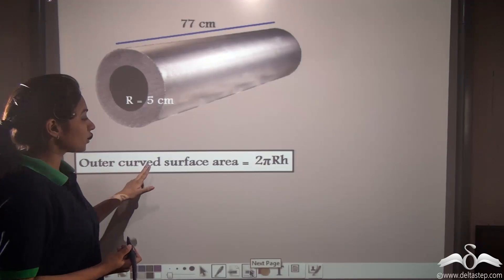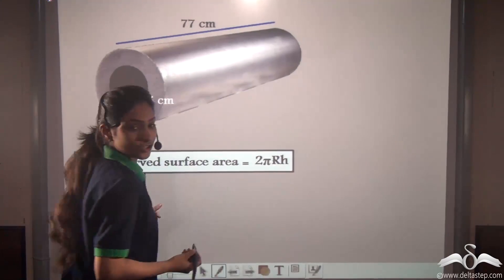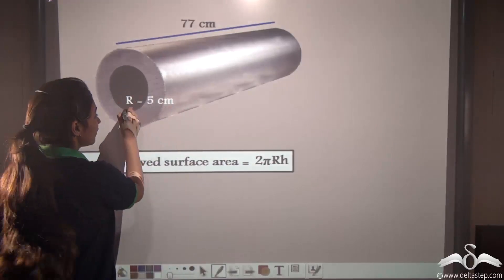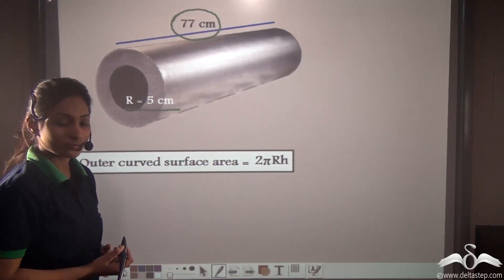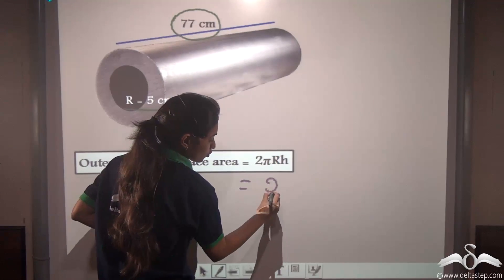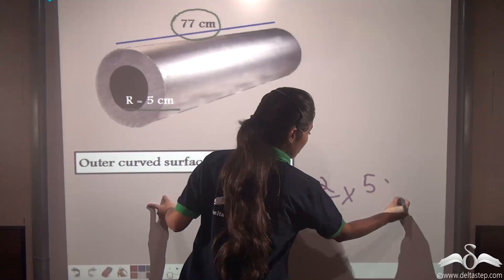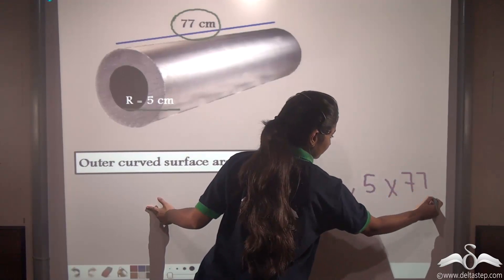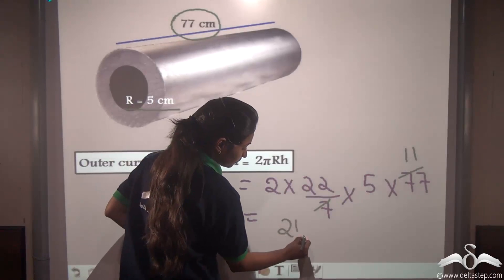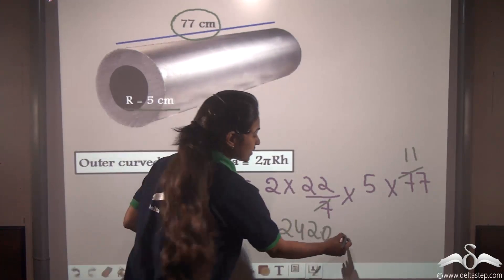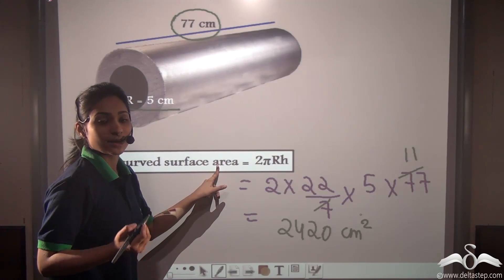Now, the outer curved surface area is found by the formula 2πRh, where R is the outer radius of 5 cm and h is the height of 77 cm. Putting in the values: 2 × (22/7) × 5 × 77. Solving this gives us 2420 cm². Area is always represented in square units.